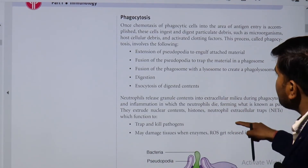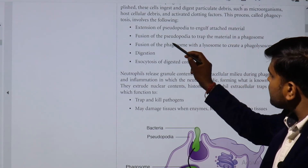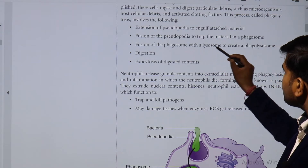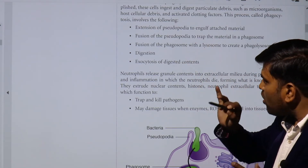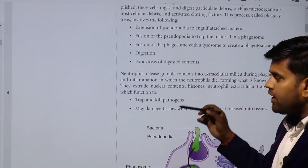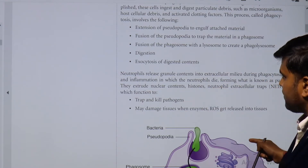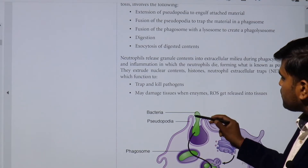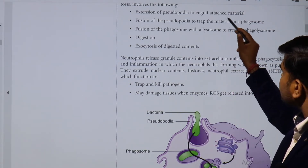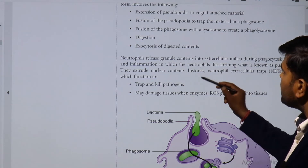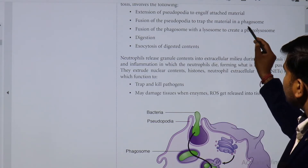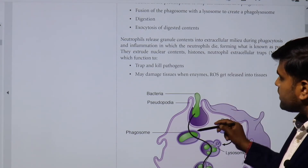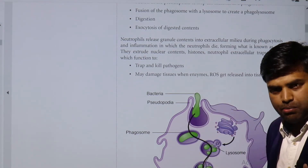The phagocytosis process involves: extension of pseudopodia to engulf the material, fusion of the pseudopodia to trap the material forming the phagosome, then fusion of the phagosome with the lysosome to create the phagolysosome, then digestion of all components, and finally exocytosis of the digested content. Initially, pseudopodia extend and the bacteria becomes trapped — this is called the phagosome.